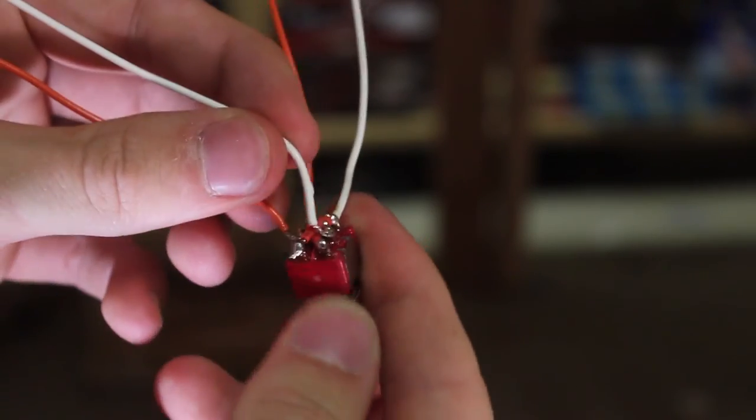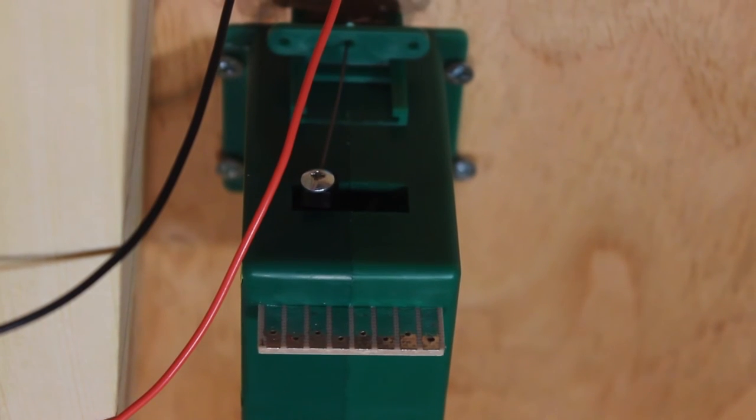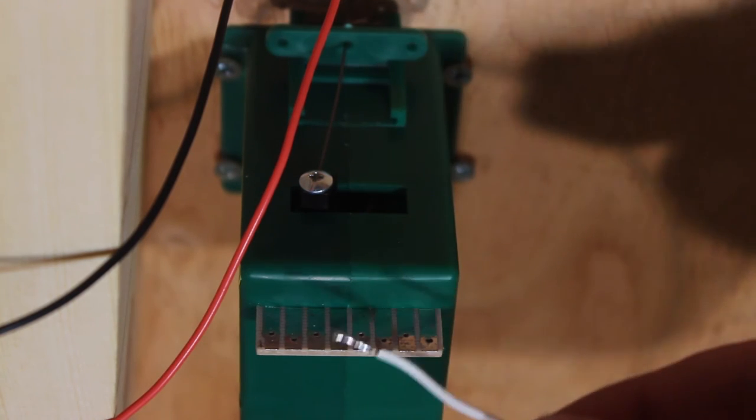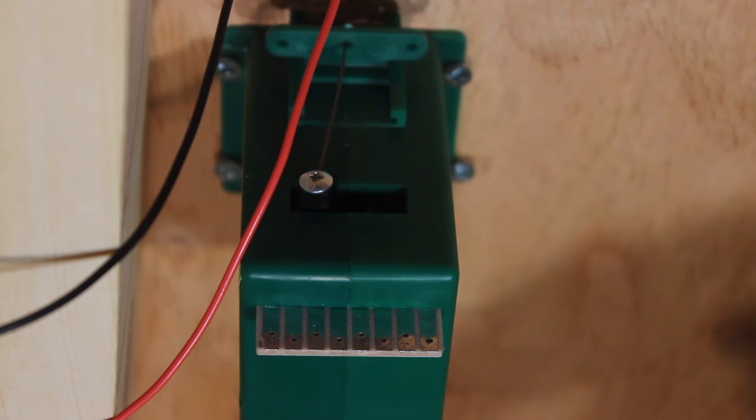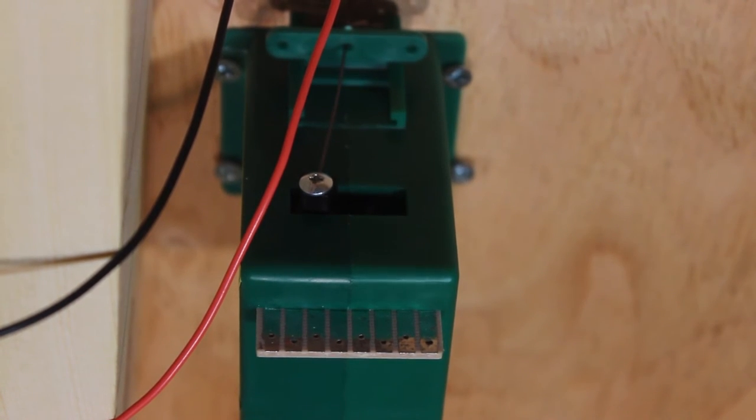We'll go ahead and move over to our switch machine and get it installed on that. So now we're over here at the switch machine. What I went ahead and did was pre-tin each of these wires that comes and leads to this. Now what we're going to do is solder them to this tortoise switch machine.